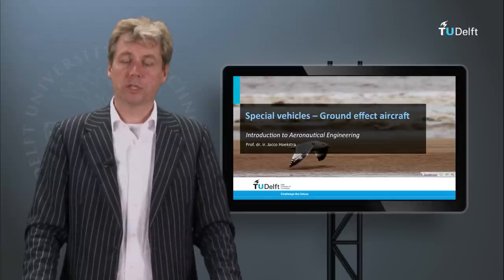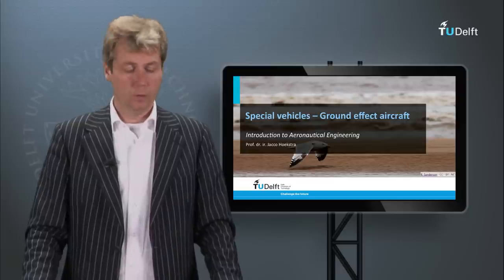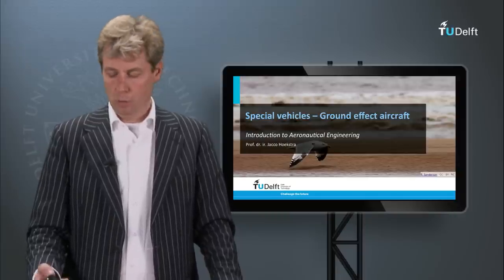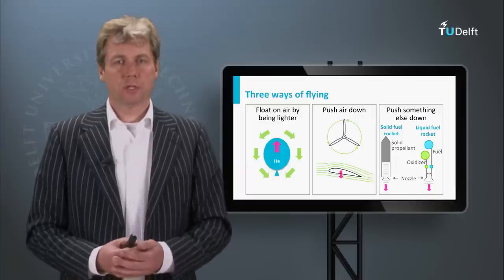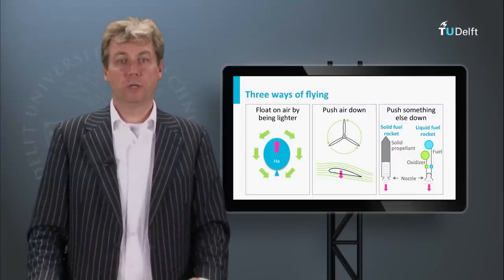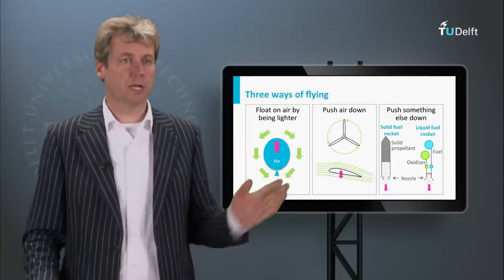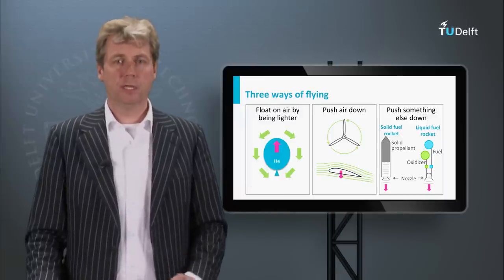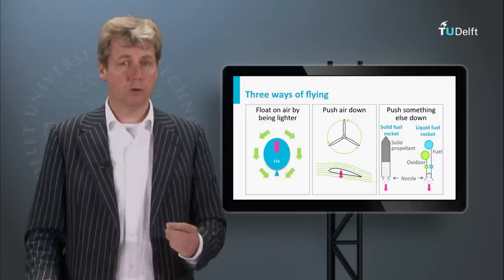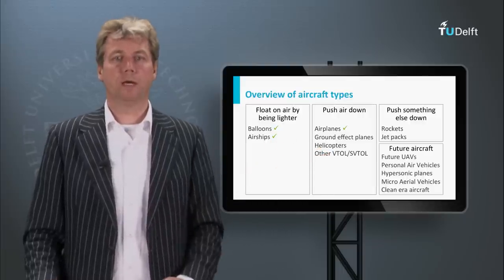Welcome to this lecture where we will discuss the final topic of the first module of this course. In about four video clips we will discuss the special vehicles. We have discussed in one of the first lectures the three principles by which you can fly: being lighter than air, pushing air downwards, or pushing something else downwards. We have seen mostly the first two categories discussed so far, by looking at balloons, airships, and fixed wing airplanes.